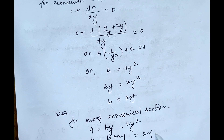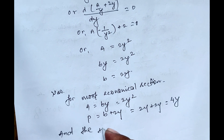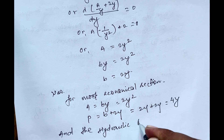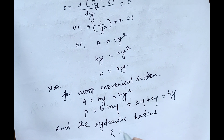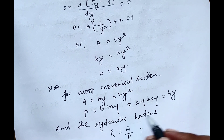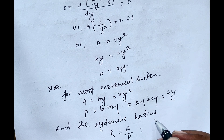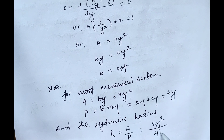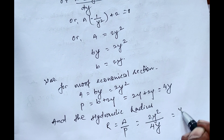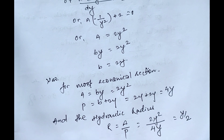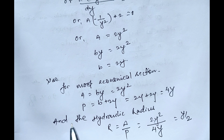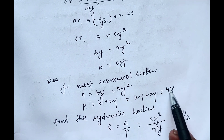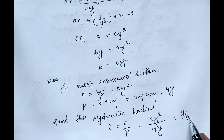The wetted perimeter P equals B plus 2y equals 2y plus 2y equals 4y. The hydraulic radius R equals A divided by P equals 2y squared divided by 4y, which gives R equals y/2. So for the most economical rectangular section: area A equals 2y squared, perimeter P equals 4y, and hydraulic radius R equals y/2.